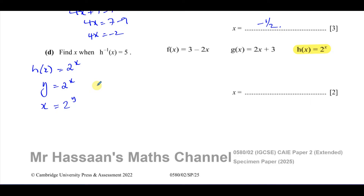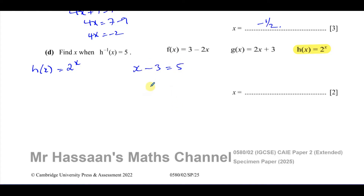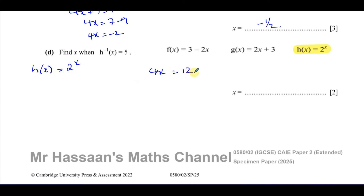For example, if we have x - 3 = 5, we apply the inverse operation — adding 3 to both sides — giving x = 8. Similarly, if 4x = 12, the inverse of multiplying by 4 is dividing by 4, applied to both sides, giving x = 3. And if x² = 36, the inverse of squaring is taking the square root, giving x = ±6.